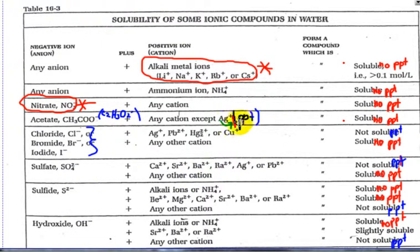This chart is set up so you look at the negative ion first, find the positive ion, and then go to the right to see what happens. Chloride, bromide, and iodide - if you have any of those negative ions in the presence of silver, lead 2, mercury 2, or copper 1, it's not soluble, which means PPT. With any other positive ion, it's soluble.